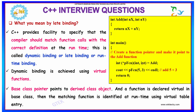If you see over here, we are assigning a pointer with the add function, and when we are running the statement we get the addition of both the numbers. This is nothing but dynamic binding happening, and it is happening during run time.